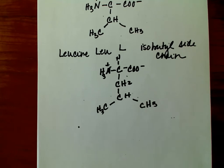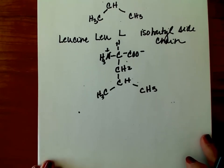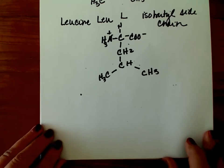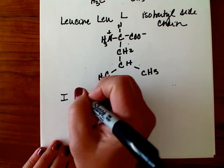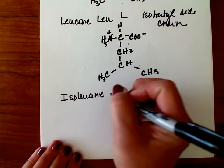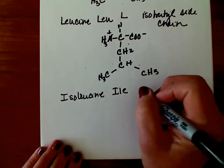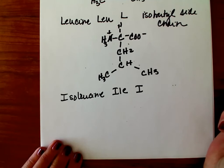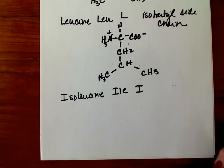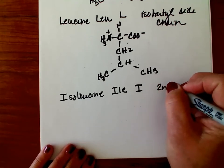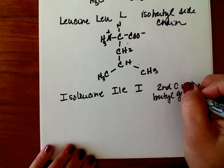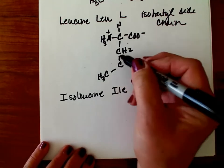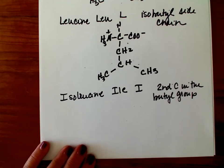Thus far, all of our nonpolar amino acids will have a zero net charge overall. That's going to change when we get to amino acids that have side chains containing moieties that can be ionized. But next on our list is isoleucine — three-letter abbreviation ILE, one-letter I. This also has a side chain that is a butyl group, but the alpha carbon is attached to the second carbon in the butyl group, whereas in the isobutyl group it's attached via the third carbon in that chain.